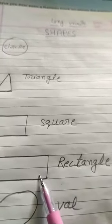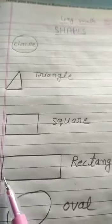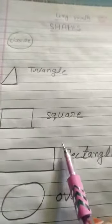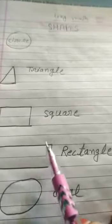Next, rectangle. This is a rectangle. It has four sides. One, two, three, four. Its opposite sides are equal.